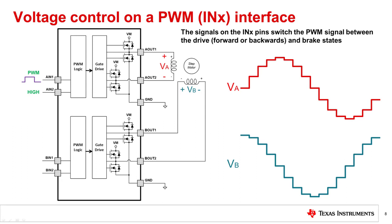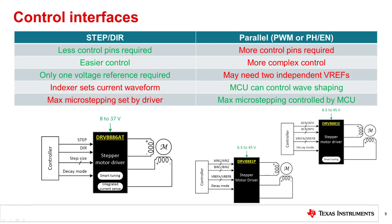For voltage control, the phase enable interface may be easier to use than the PWM interface since it only requires two GPIO with the PWM output peripherals of a microcontroller. However, the PWM interface offers more options for output states. The system designer can decide which interface is best for their application by looking at the control input state table. The table on this slide compares the step direction interface with two types of parallel interfaces. The step direction interface helps simplify the complexity of control signals from the microcontroller by using the indexer table integrated in the driver. This allows the system designer to choose a lower cost microcontroller with fewer features or reduce the complexity of the firmware.